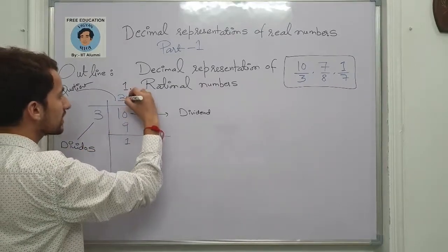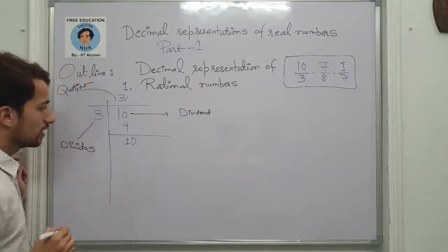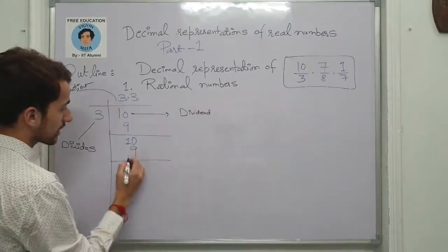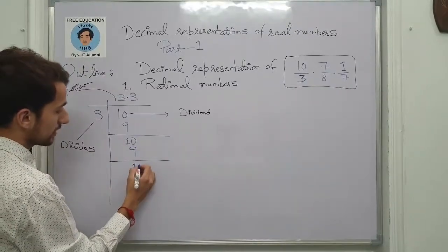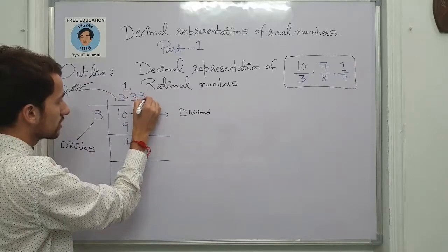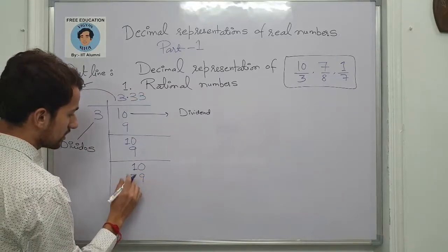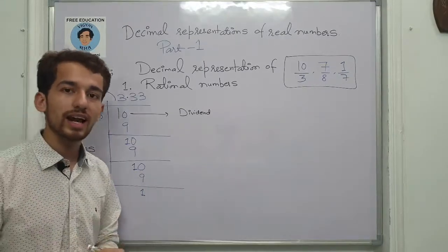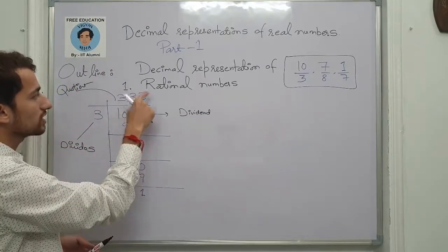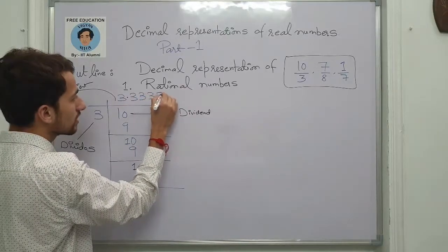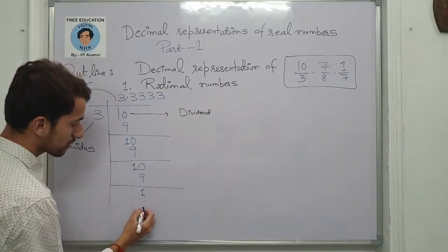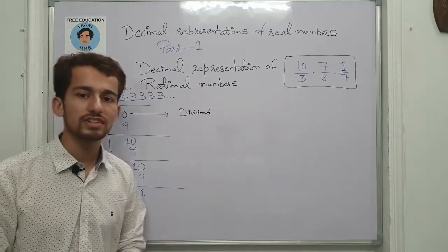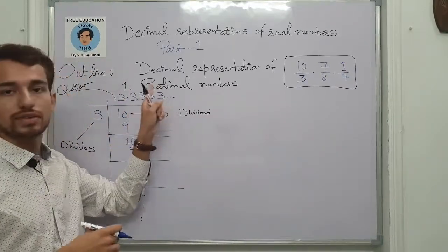I have to take a decimal here and mark a zero to continue. Now it's possible to divide — after subtracting we get one again, so we put a zero to continue the division. If you observe now, there is a pattern: every time the remainder is the same, so the quotient digit will also be the same. This decimal representation will continue in a similar fashion — I don't need to divide further because the threes are repeating.